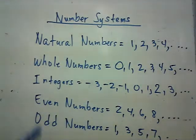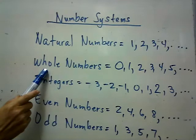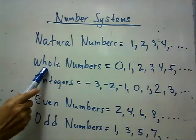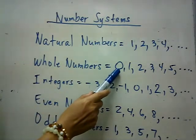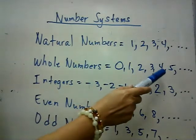Our next number system are the whole numbers. When we say whole numbers, it includes zero, then 1, 2, 3, 4, 5, 6, 7, 8, 9, 10 and so on.